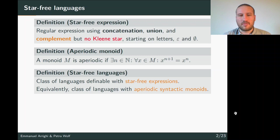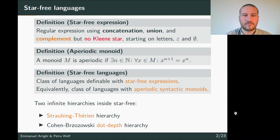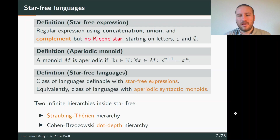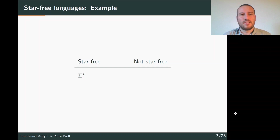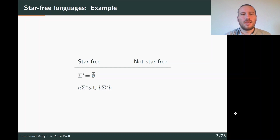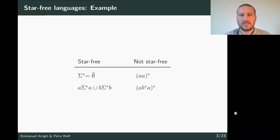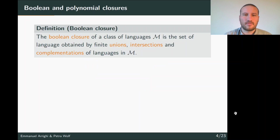A star-free language is the class of languages that can either be defined by a star-free expression or whose syntactic monoid is aperiodic. We look at two infinite hierarchies inside the star-free languages: the Straubing-Thérien hierarchy and the Közen-Bosowski dot-depth hierarchy. Some examples of star-free languages: Σ* is star-free because it is the complement of the empty language; languages where words start and end with specific letters are also star-free. Non-star-free languages include (aa)*, which can be seen using the monoid characterization.